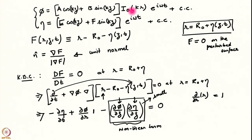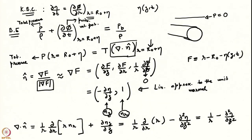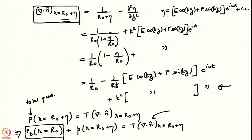The I0 had appeared in phi, and there were trigonometric functions which appear in both phi and eta. Then we did a normal mode analysis. We had worked out the linearized kinematic boundary condition and had also looked at the expression for the divergence of the unit normal evaluated at the perturbed interface. Let us continue from there.